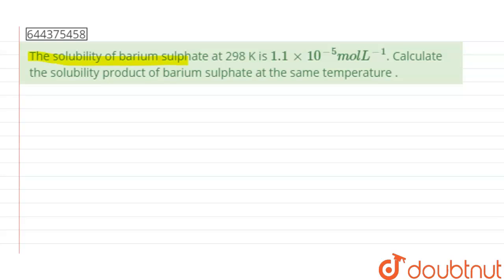Hello guys, so the given question says the solubility of barium sulfate at 298 Kelvin is 1.1 × 10^-5 mole per liter. Calculate the solubility product of barium sulfate at the same temperature.